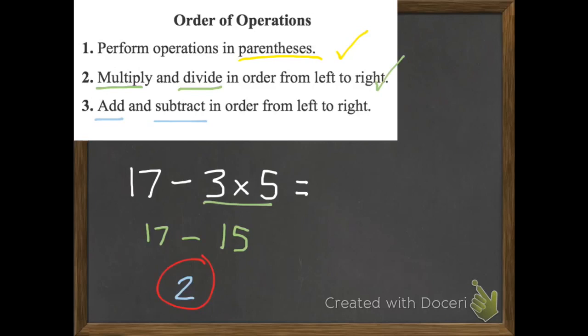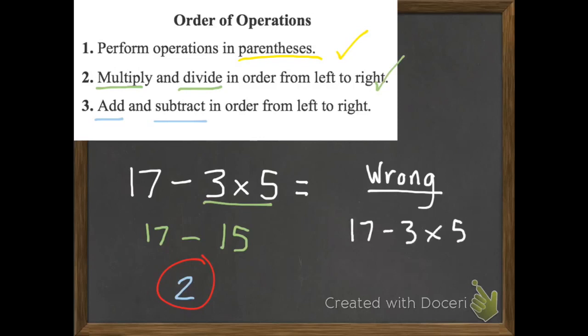So there we go, we're done again. Watch what would have happened if I'd just done this from left to right — that's the wrong way. So we have 17 subtract three times five. If I didn't know my order of operations, I would have started with 17 subtract three, which is 14. Then I still have times five. So what is 14 times five? It's 70, which is very different than two. So 70 is wrong, wrong, wrong, wrong, wrong, wrong, wrong, wrong.